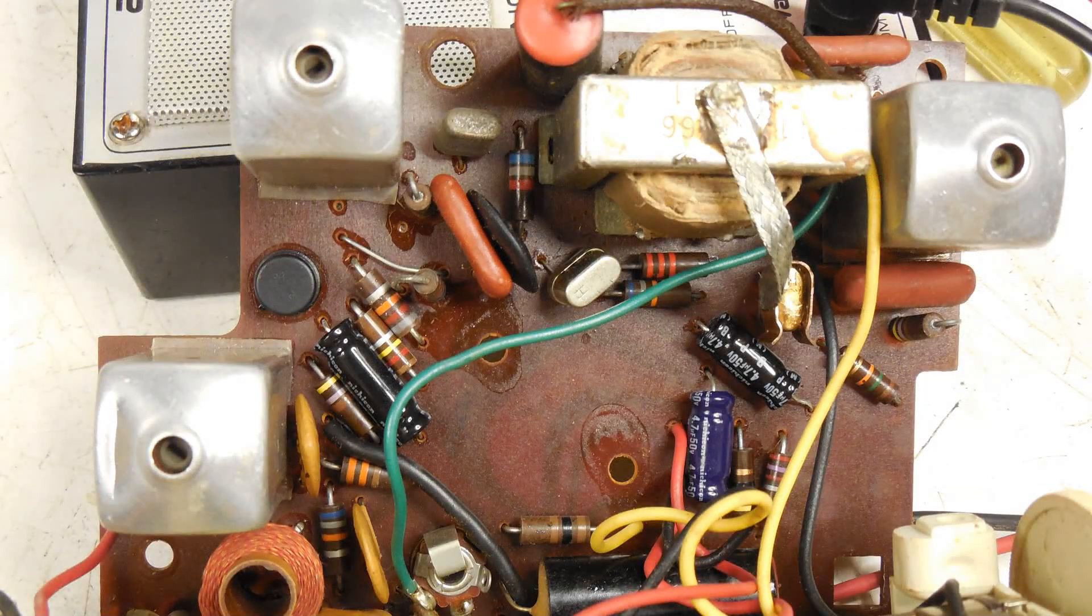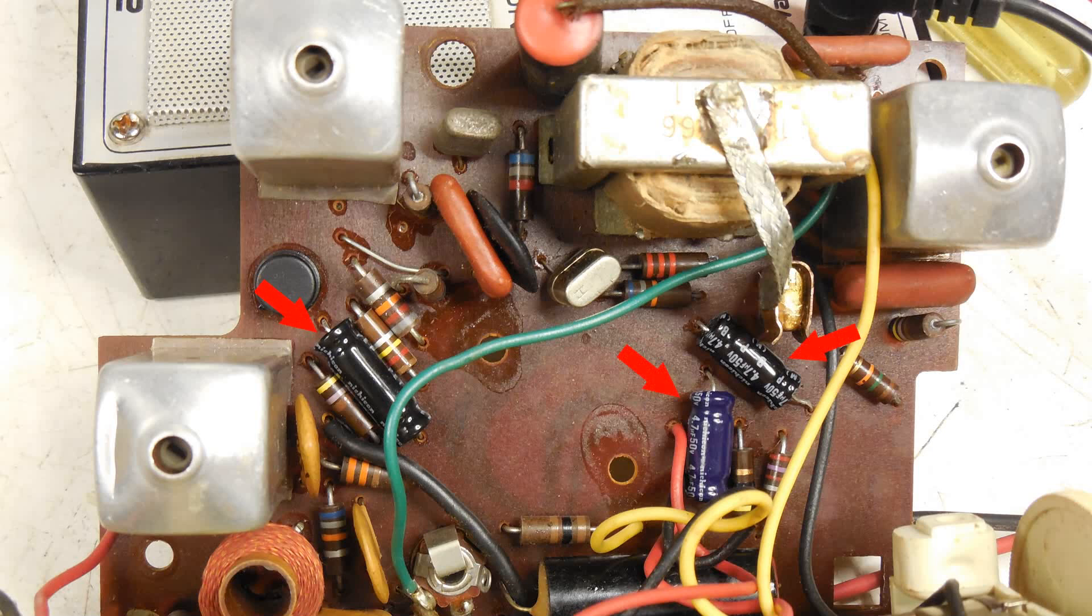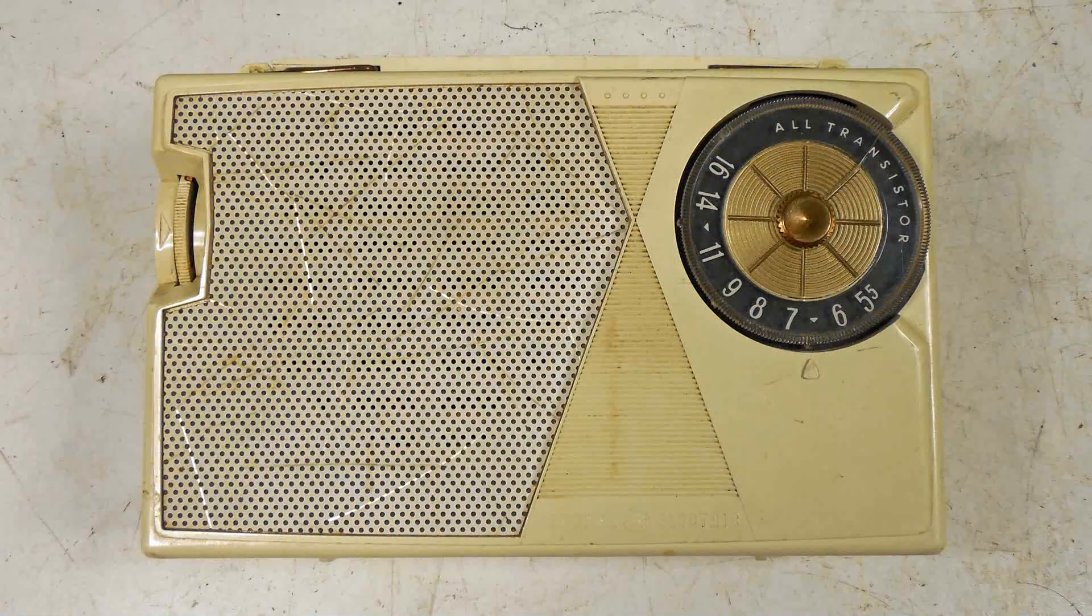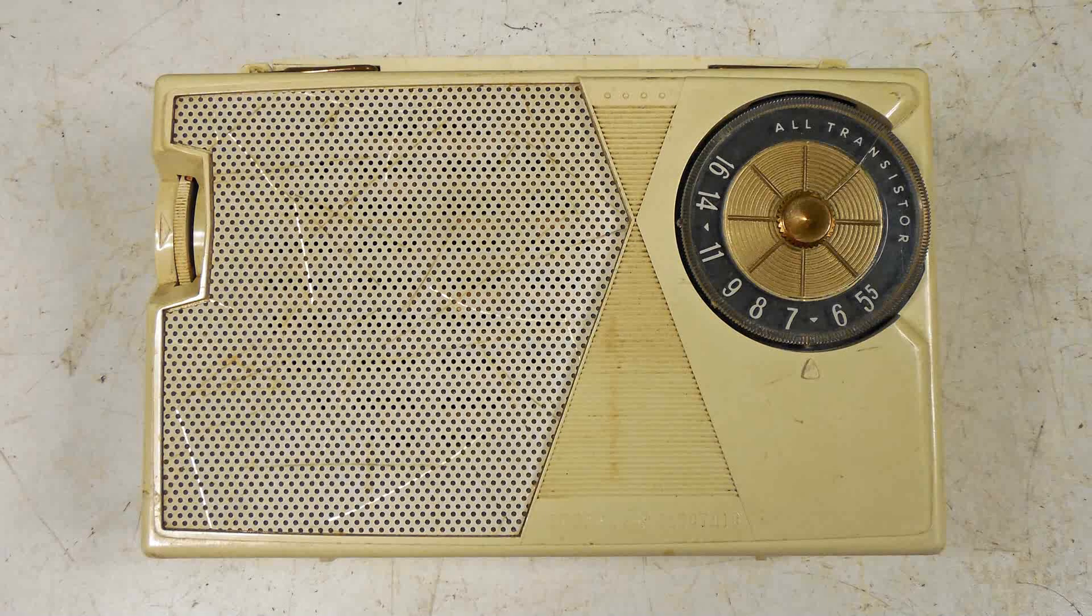Here are the three capacitors that I changed out. And there are two more electrolytics that I haven't changed yet. They are of a different manufacturer and seem to be just fine. But generally, now you see why when you get an old radio like this, or an old tube type radio, you just automatically change out all the electrolytic capacitors. But I thought you'd like to see the symptoms of what each of these bad capacitors did in the circuit and how they affected the circuit.